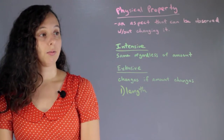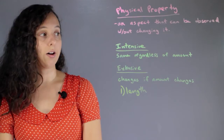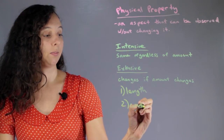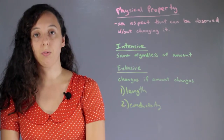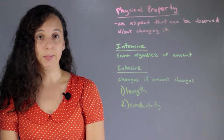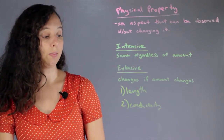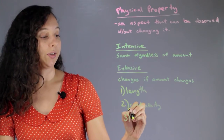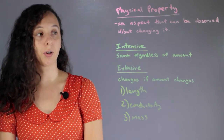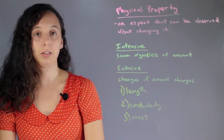So let's review a little bit more. Intensive physical properties are the same regardless of the amount. A good example of this would be conductivity — if you have a short wire or a long wire made of silver or gold, it'll conduct exactly the same. Versus extensive, which changes if the amount changes. A good one for this is mass: one pound of bricks is a lot different than two pounds of bricks. You can observe both without changing it, so they're physical properties, but it changes if the amount changes, so it's extensive. These are the two types of physical properties.